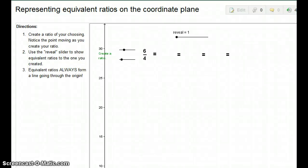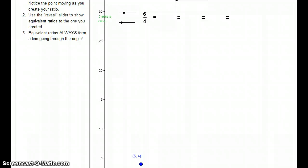We're briefly going to be looking at representing equivalent ratios on the coordinate plane. What we're going to do is take a look at this particular ratio of 6 to 4, where 6 is the numerator and 4 is the denominator. We're going to see where that gets plotted on the coordinate plane.